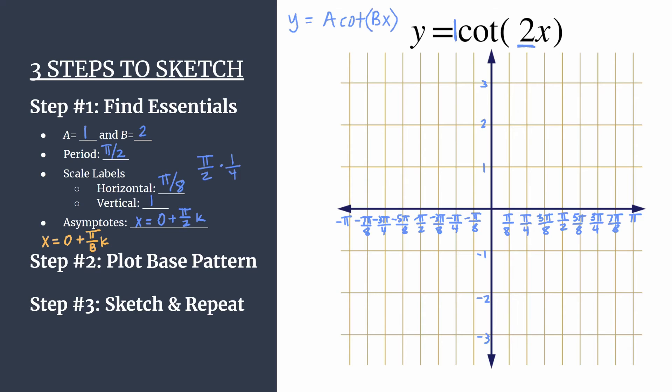So if we substitute in zero for k, of course, we get that first asymptote we talked about at x equals zero or the one on the y-axis. If you sub in k is one, we should expect one at pi over two. When k is two, we see we should expect another asymptote happening at pi. Let k be negative one or negative two. You'll see asymptotes should be negative pi over two, negative pi.